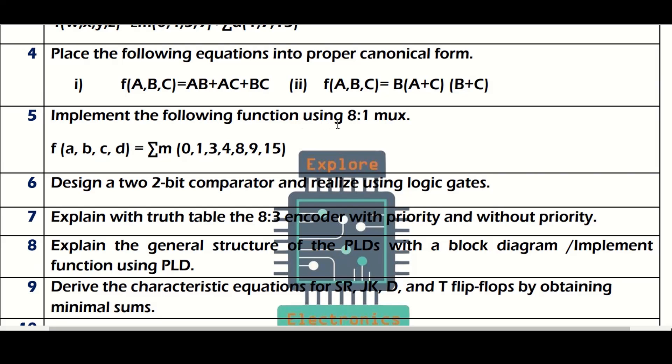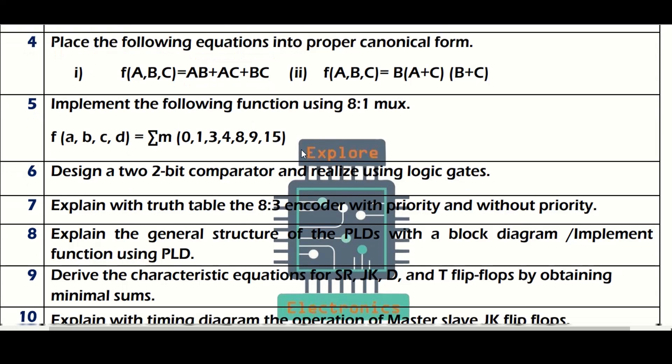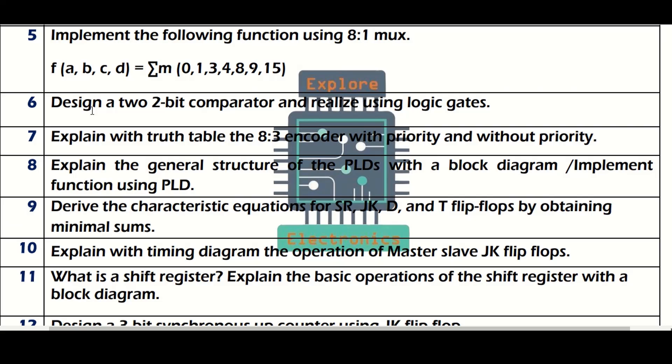Implement the following function using 8:1 mux. Like this you will be getting a function, you need to implement it using 8:1 multiplexer. This question is also many times asked in the previous exam. Then two-bit comparator, you realize using logic gates. Some of you are asking for standard theory questions apart from problematic questions like this. So you can learn two-bit comparator, 8:3 encoder with priority and without priority.